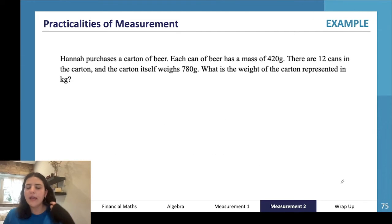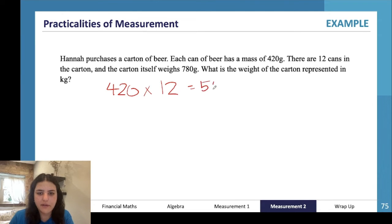Okay, this is another example. Hannah purchases a carton of beer. Each can of beer has a mass of 420 grams, there are 12 cans in the carton, and the carton itself weighs 780 grams. What is the weight of the carton represented in kilos? Okay, so each can of beer has 420 grams, there are 12 of them, so 420 times 12 is 5040 grams.